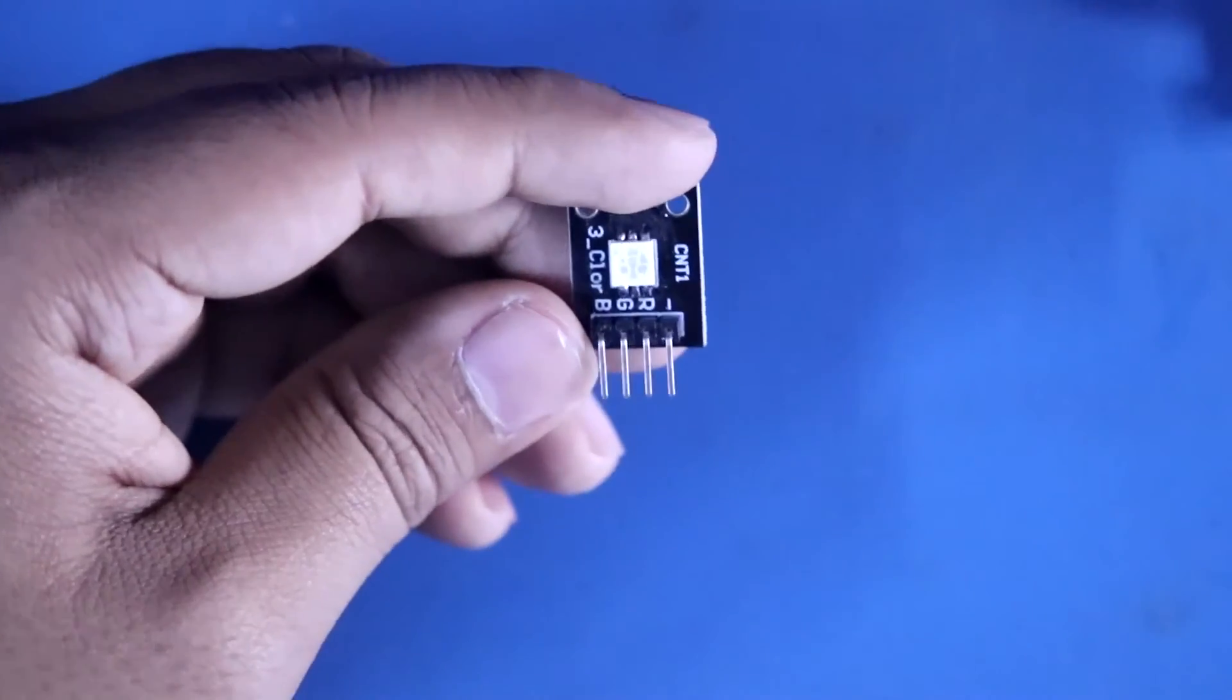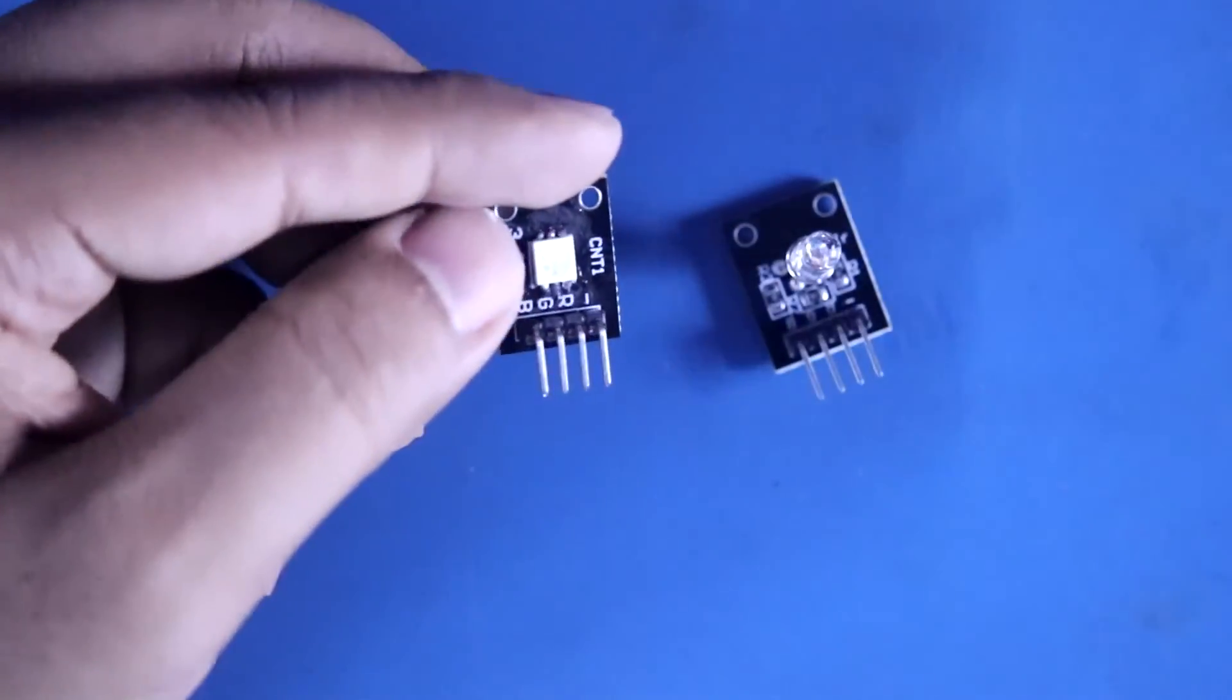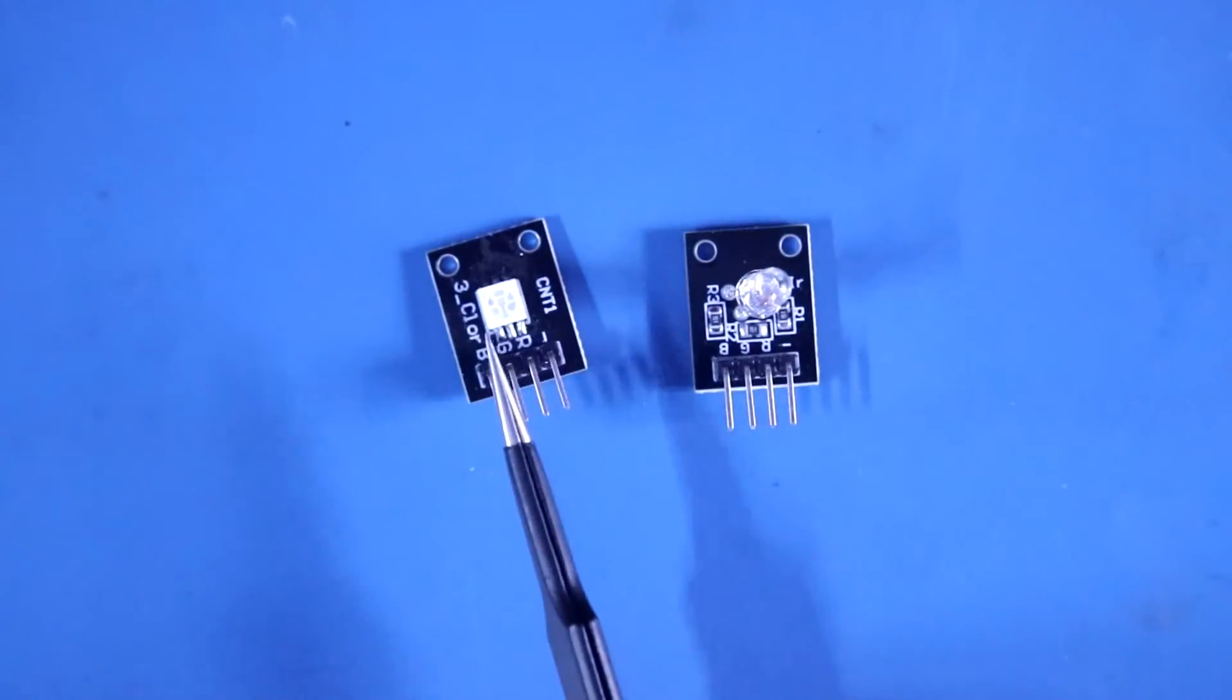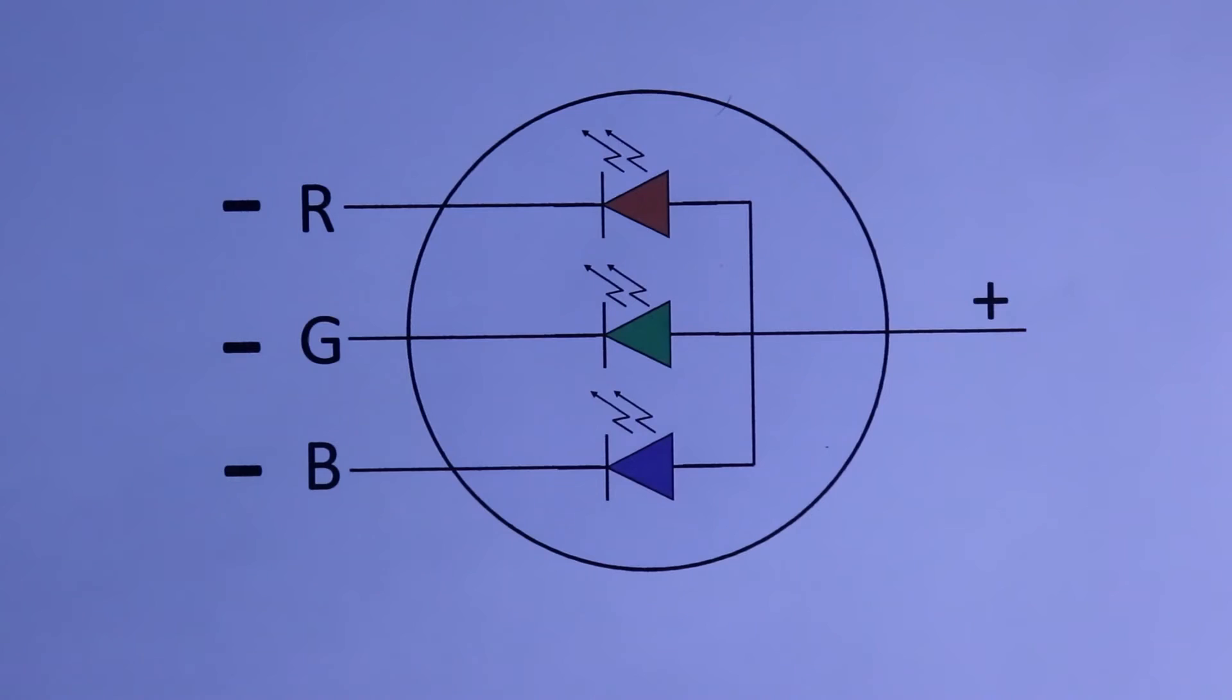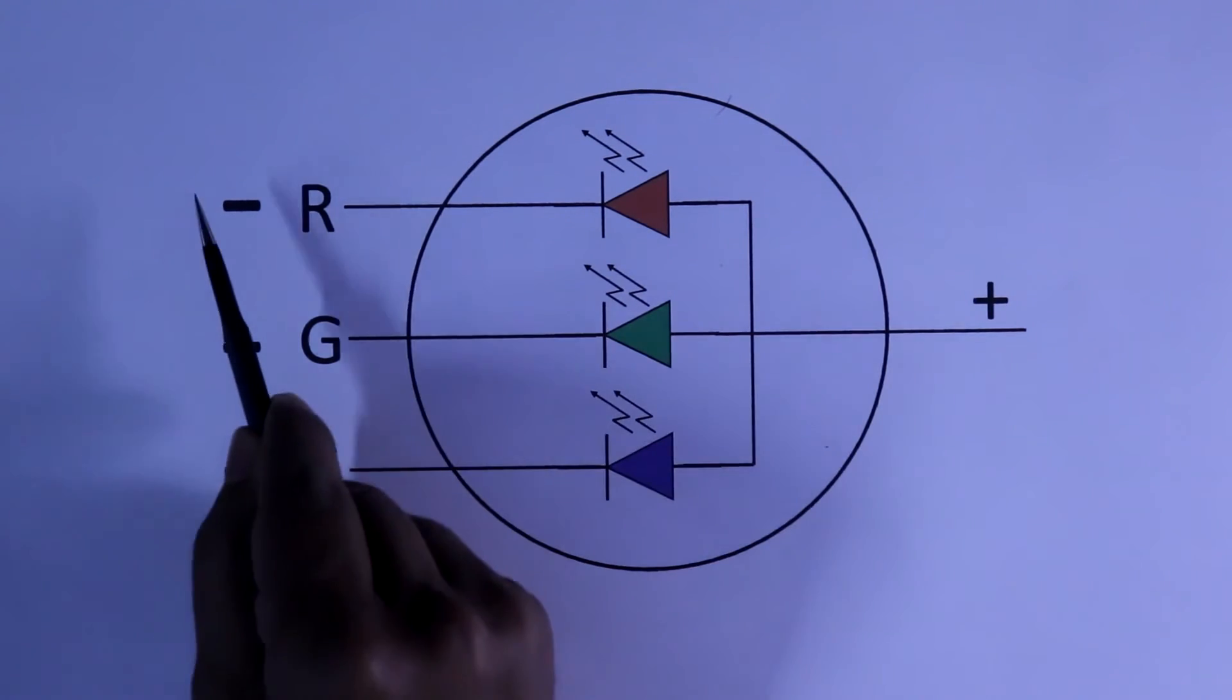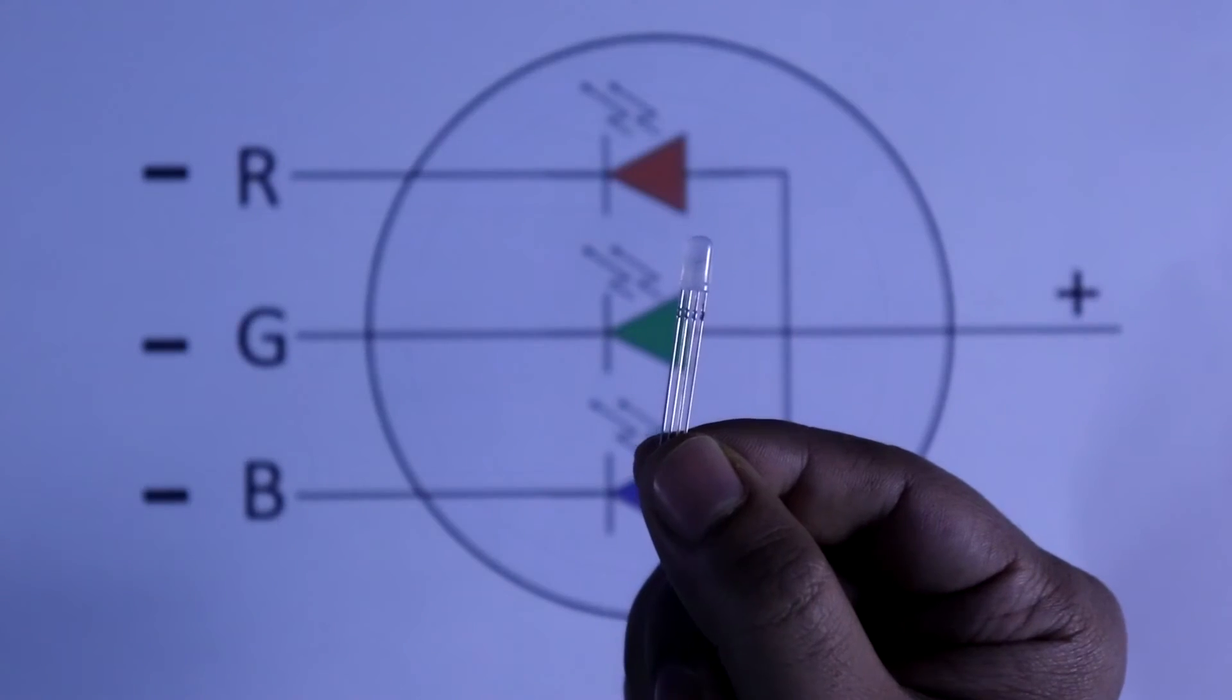We have to do same as KY016. These both LEDs are common cathode. This one is also RGB LED but it is common anode and this is the connection inside the LED: one positive and three negative.